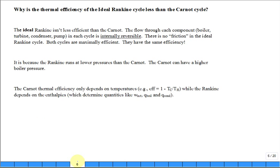Why is the thermal efficiency of the ideal Rankine cycle less than the Carnot cycle? Why? Why is the thermal efficiency, eta, less for the ideal Rankine cycle than the Carnot cycle? Here's a student who may have written this answer. They say, oh, the ideal Rankine cycle isn't less efficient than the Carnot. The flow through each component, through the boiler, through the turbine, through the condenser, through the pump in each of the cycles, in the ideal Rankine as well as the Carnot, are internally reversible. Is that statement true?